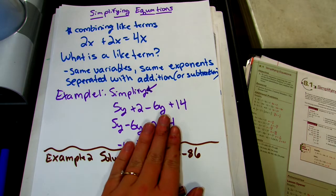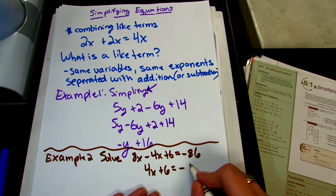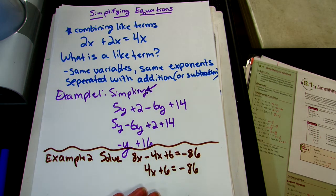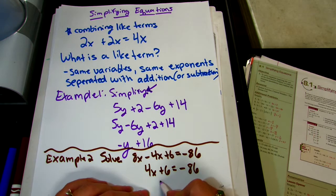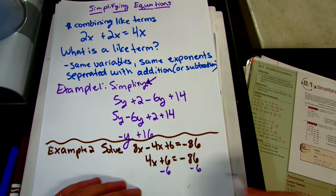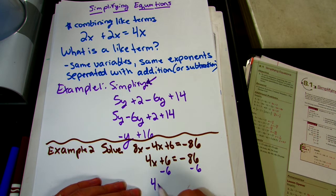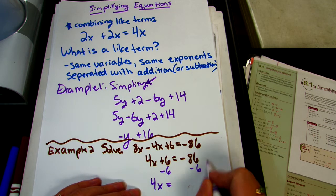When we look on the right side of the equation, the only term is negative 86, so that stays. Our next step is to solve for x. We have a two-step equation, which means we take care of addition and subtraction first. I'm going to take care of that plus 6 by doing the inverse operation and subtracting 6 from both sides, leaving me with 4x equals negative 86 minus 6.